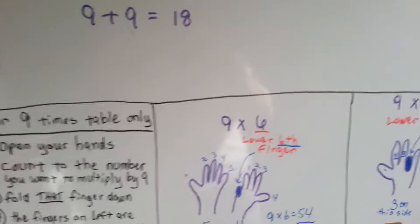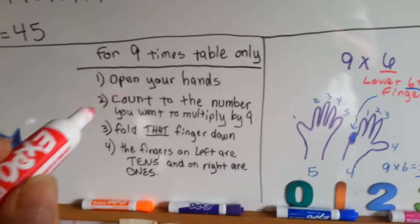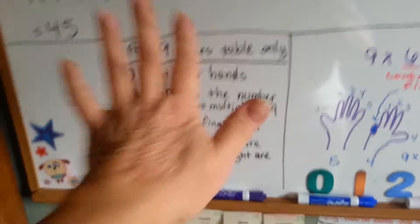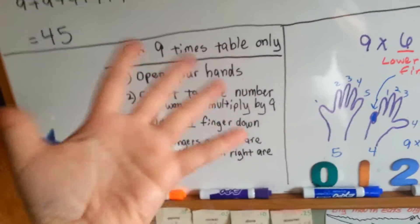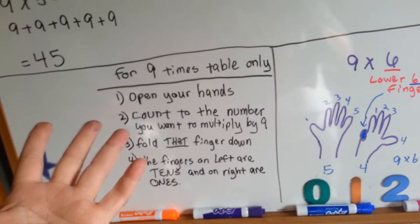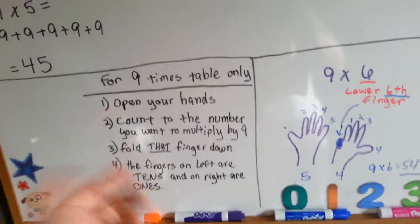So, here's my other trick for the 9 times table. You open your hands out completely, and it doesn't matter if you go this way or this way. I usually go this way with my thumbs out.